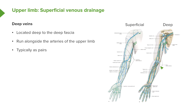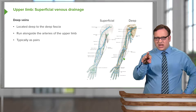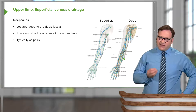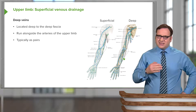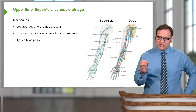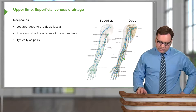The deep veins will be covered throughout the course when we look at the musculature. They are located deep to the deep fascia, running within the muscular compartments alongside the arteries of the upper limb. For example, alongside the brachial artery we have brachial veins, and alongside the radial and ulnar arteries we have radial and ulnar veins. These veins typically run as pairs or threes — small channels running alongside the arteries. Because these veins have valves, they use the contractile properties of the arteries to propel blood through the venous system, and the valves ensure blood can only pass proximally, back towards the heart.